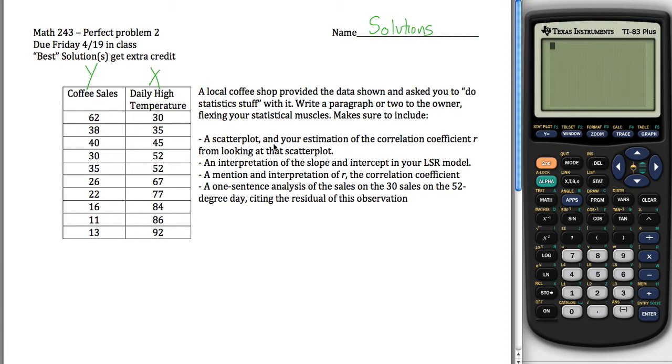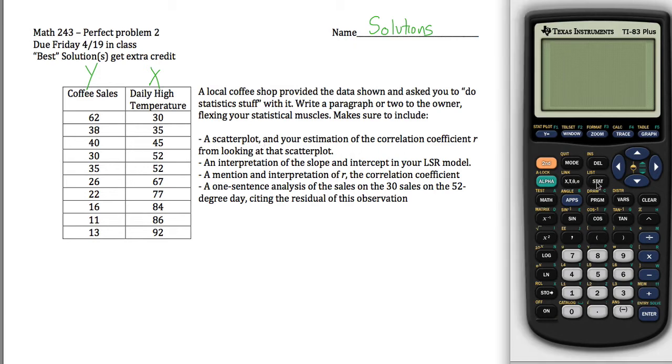Now what I'm asked to do is create a scatterplot. The way you can create a scatterplot is first put in all your data, so stat, edit, type them into lists, keep track of what variable you put where. My x's are in L2 and my y's are in L1. Then to create your scatterplot, go up to statplots here, go into statplots, make sure it's on, select the type you want. This first type kind of looks like a scatterplot, so we're going to use that.